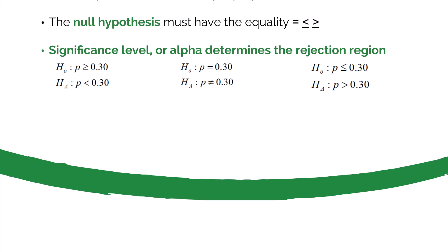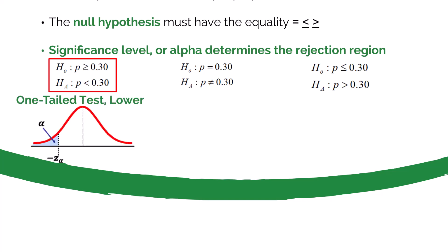Here are a few examples of null and alternative hypotheses. On the left, we have the null hypothesis that the population proportion is greater than or equal to 0.30, or 30% of the population. Looking at the alternative hypothesis, we see the less-than sign, which indicates the direction of the test — this is a one-tailed lower test, and the rejection region will be on the left side of the curve.